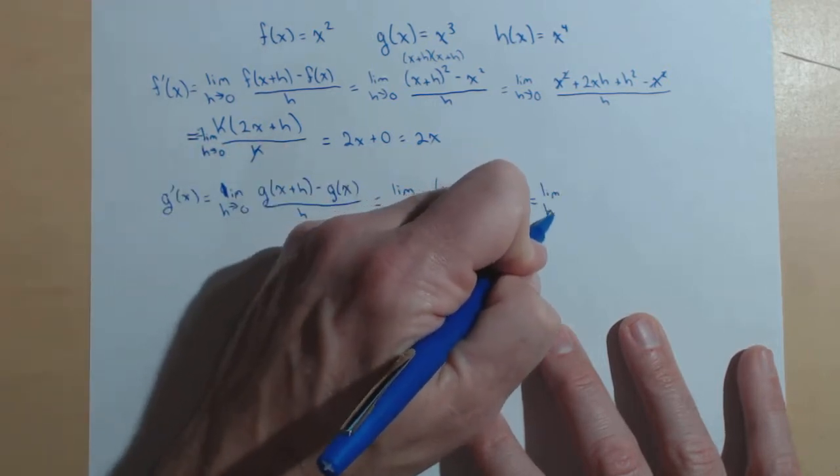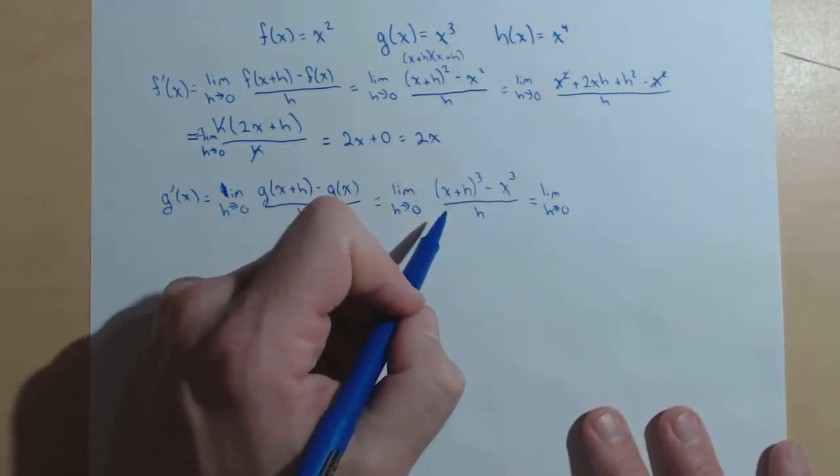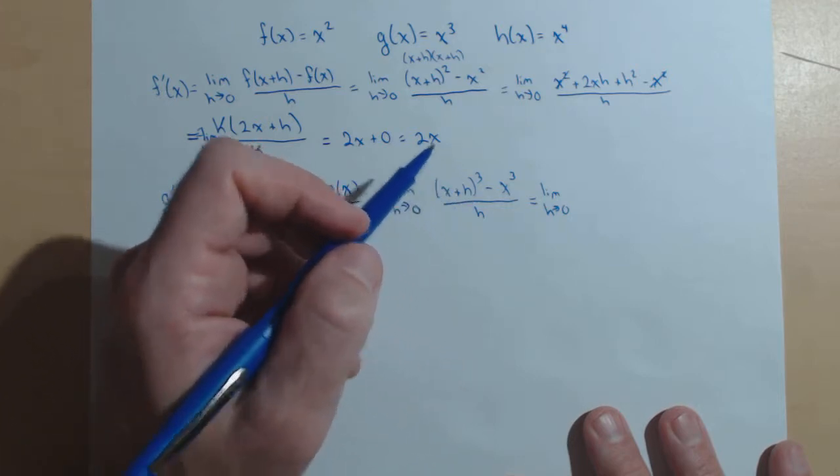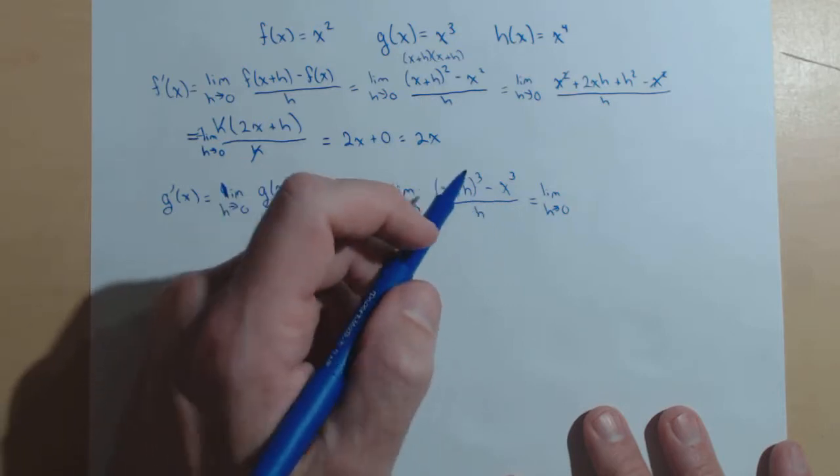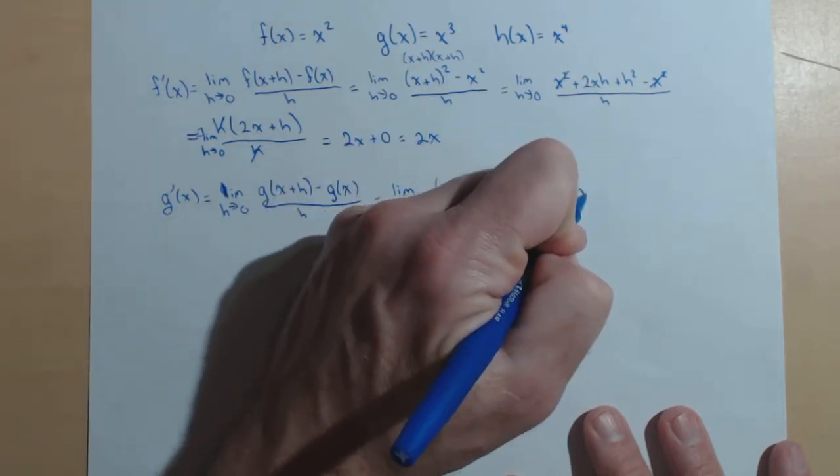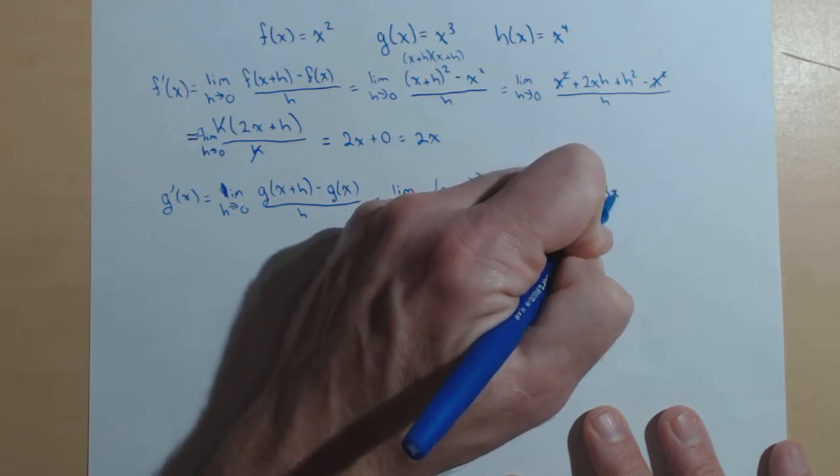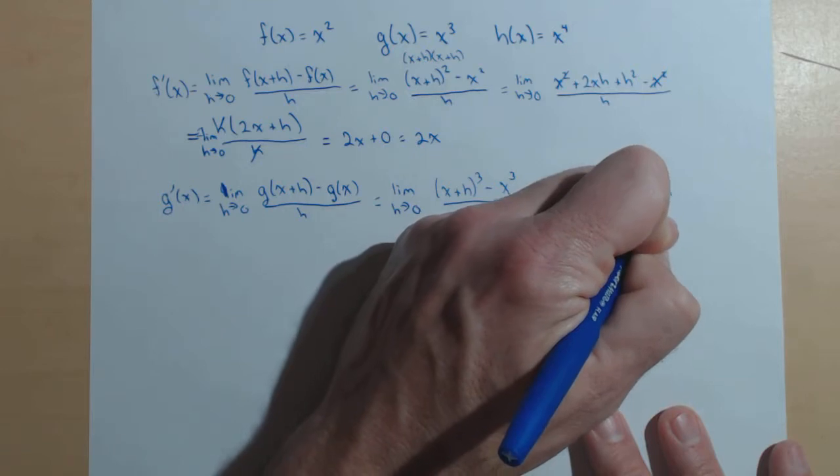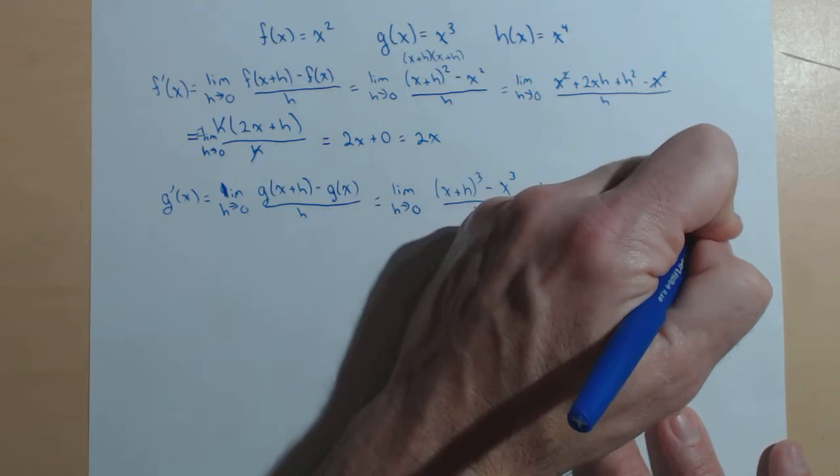Once again, this needs to be multiplied out. You can't just say it's x cubed plus h cubed. That's not correct. So this will need to be multiplied out. It's x plus h times x plus h times x plus h. For this video, that's not what I'm focusing on. When you multiply that out, you're going to get x cubed plus 3x squared h plus 3xh squared plus h cubed, and then finally minus the x cubed here.